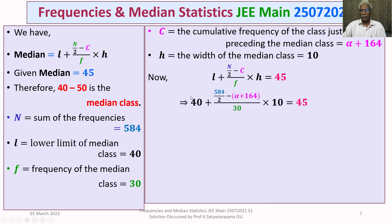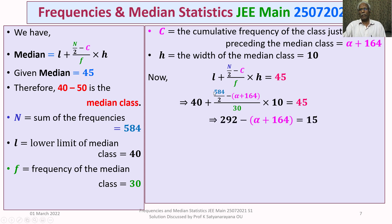Simplifying further: 10/30 equals 1/3, so multiplying both sides by 3 gives 15. Then 584/2 equals 292, so we get 292 minus (alpha + 164) equals 15, which simplifies to 128 minus alpha equals 15. This implies alpha equals 113. This is equation 2.